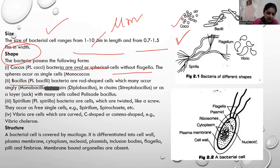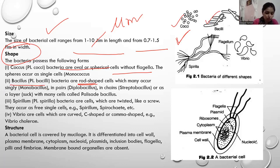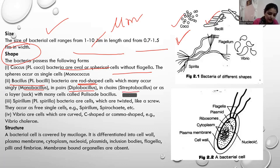Bacillus — bacillus means rod shape. You can see here, bacillus is a rod-shaped bacteria. Monobacillus when there is 1 rod, diplobacillus when there are 2 rods, and when they are in chains, it is streptobacillus. So all of these are your bacillus — a rod-shaped bacterial form.